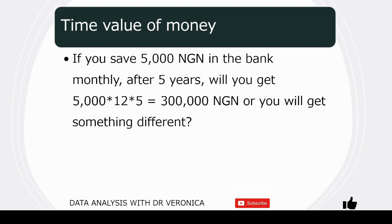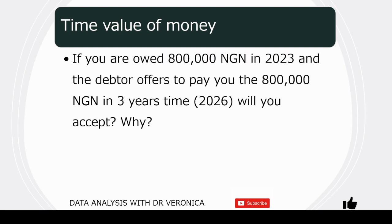If you save 5,000 Naira in the bank monthly after five years, will you get 300,000 Naira — which is 5,000 times 12 months times five years — or will you get a different amount? The second scenario is if you are owed 800,000 Naira in 2023 and the debtor offers to pay you the same sum in three years time, say in 2026, will you accept? What is going to inform your decision to accept or not to accept?